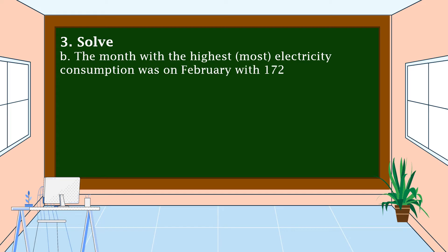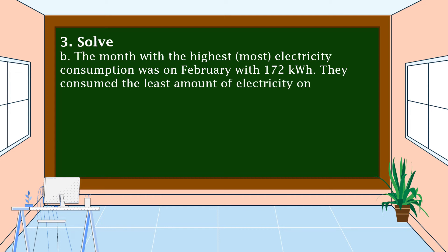For Letter B: the month with the highest electricity consumption was February with 172 kilowatt hours. Joshua consumed the least amount of electricity in January with 148 kilowatt hours.